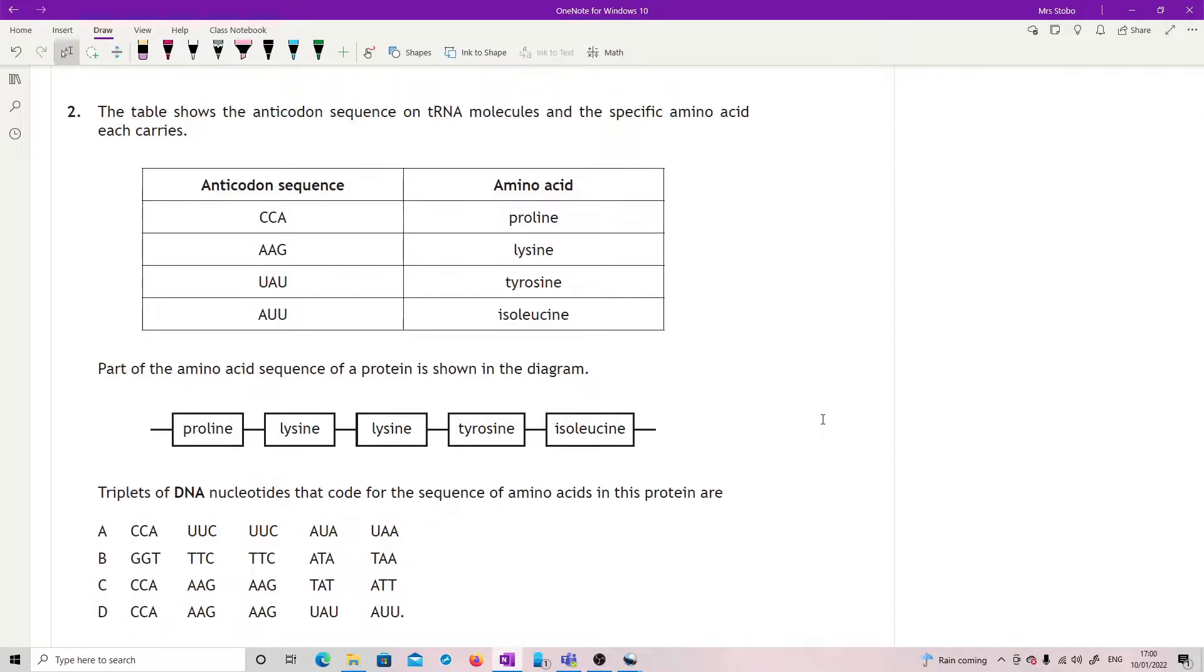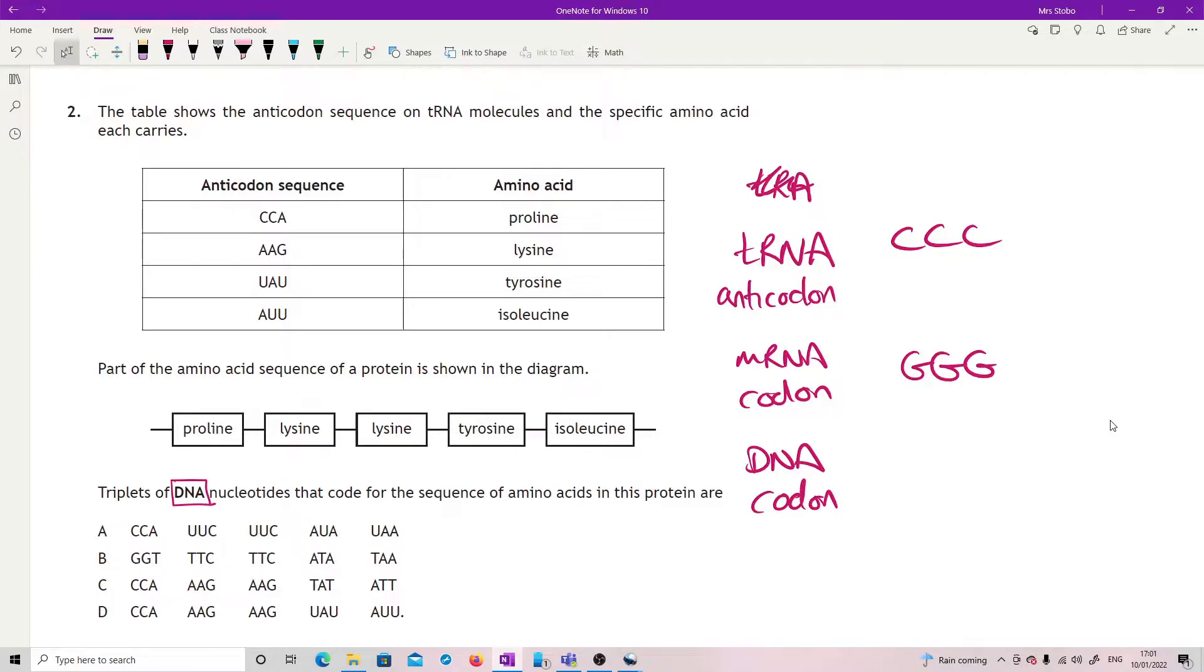Question two: the table shows the anticodon sequence on tRNA molecules and the specific amino acid each carries. Part of the amino acid sequence of a protein is shown in the diagram. Notice this is in bold - triplets of DNA nucleotides code for the sequence of amino acids in this protein. Let's be very clear on this. If the tRNA anticodon is CCC, that means the mRNA codon was GGG for it to connect up to, which means the DNA codon that we copied the mRNA from was actually CCC. So the shortcut method is the tRNA anticodon is the same as the DNA codon.